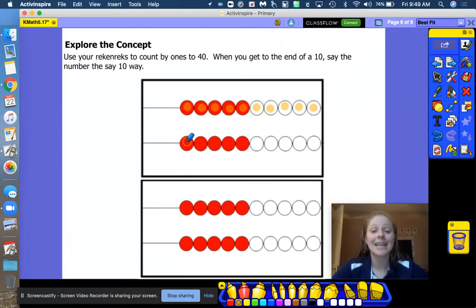We're going to count on. 11, 12, 13, 14, 15, 16, 17, 18, 19, 20. What do we say for 20? Let's say 10 way. Two 10s. Say it with me. Two 10s, 20. Great job.